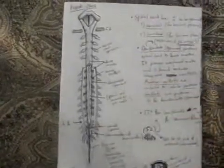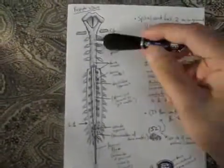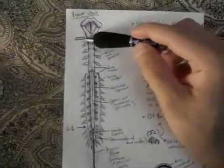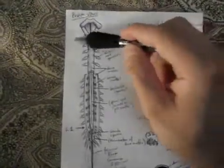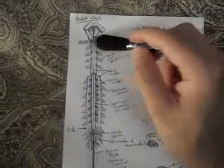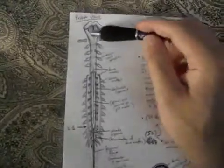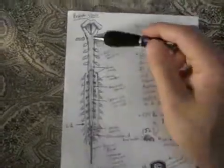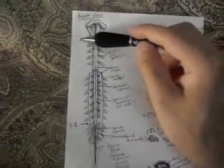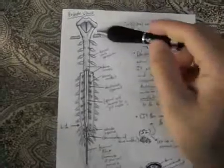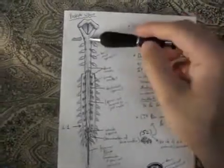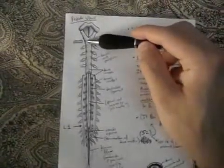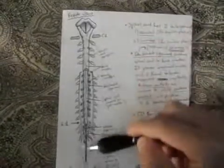This here is the spinal cord seen from posterior view from the back. The level here, indicated by these two shades, this is the foramen magnum of the base of the skull. It separates the medulla of the brain stem from the rest of the spinal cord. So you can also call this area the foramen magnum as the medulla-spinal junction. The spinal cord runs from the foramen magnum all the way down to the sacrum.